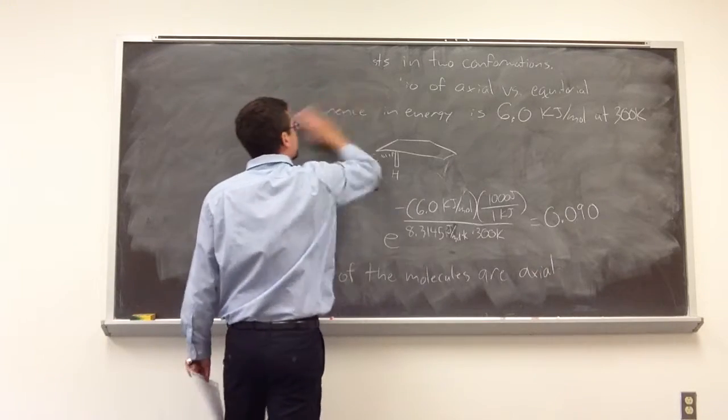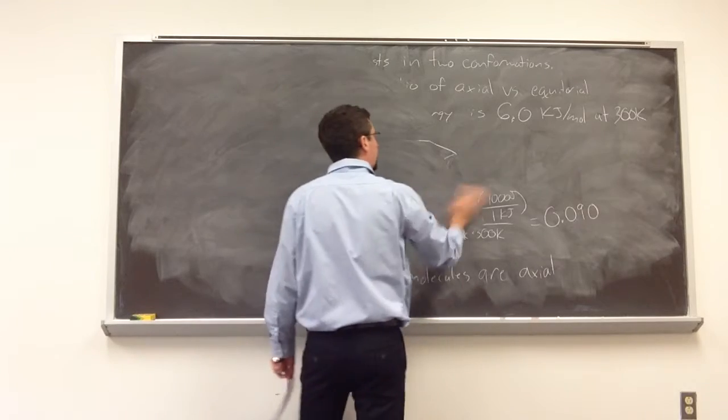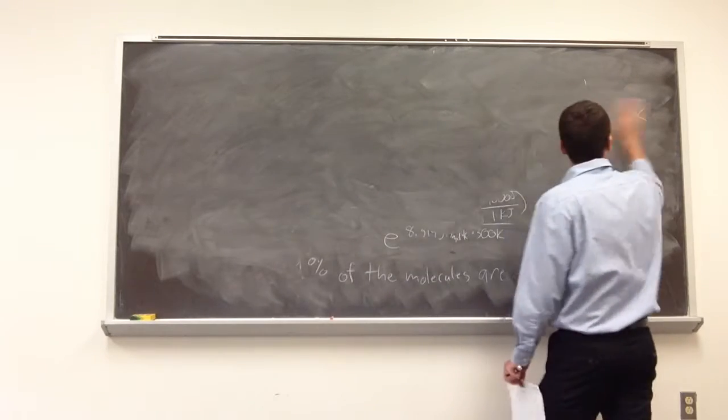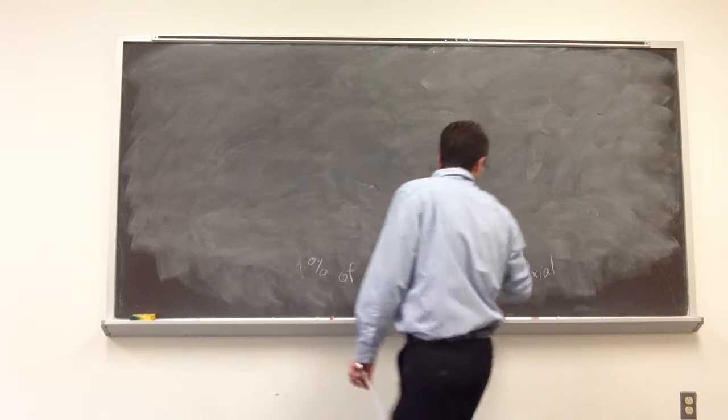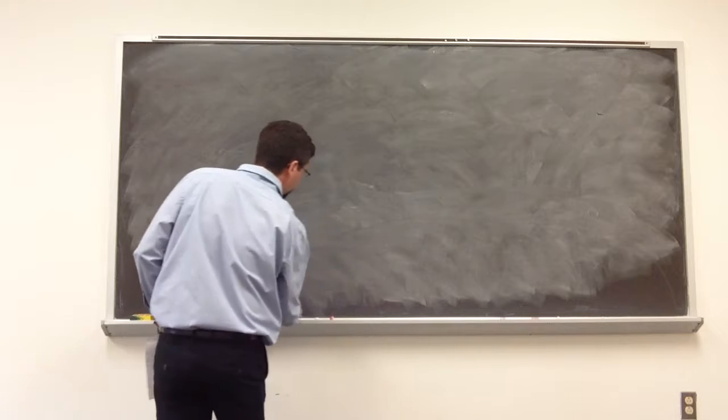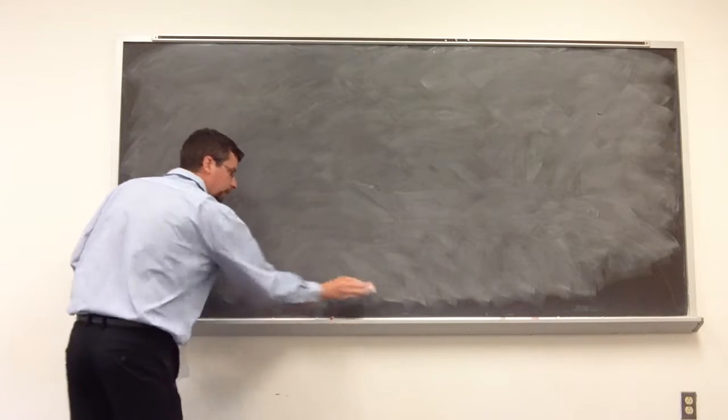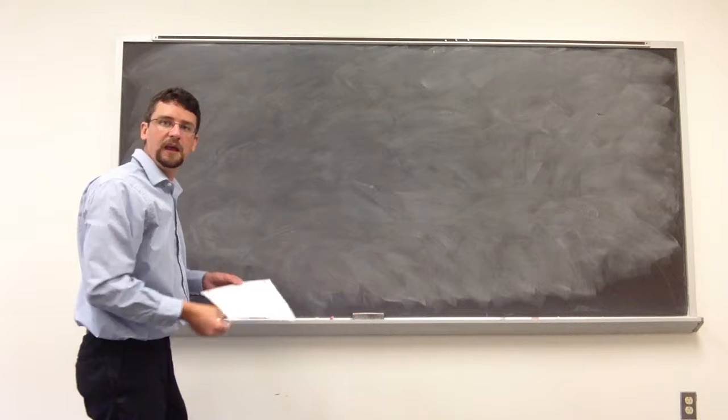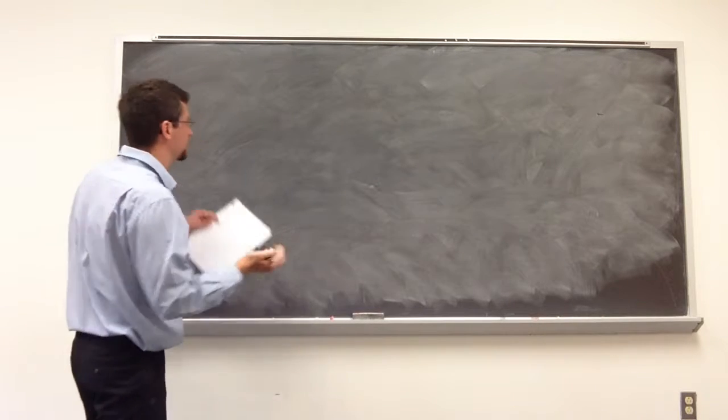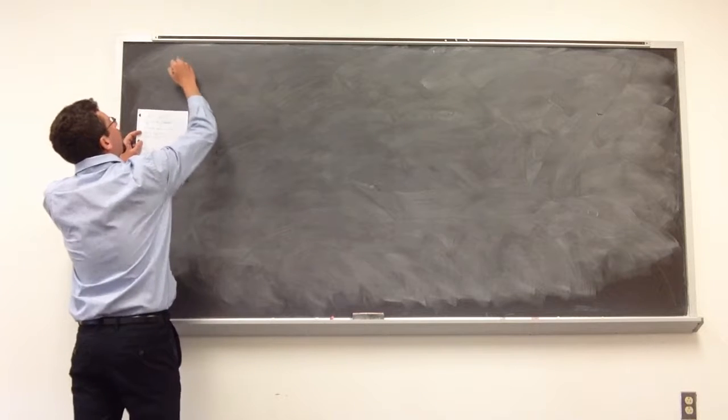So that's a little bit about Boltzmann distributions, but let's get back to what we were trying to discuss, the speeds of molecules in the gas phase. Or excuse me, particles. Particles is a better word to use. Particles includes atoms like helium, atomistic gases, and mono or polyatomic gases such as carbon dioxide.